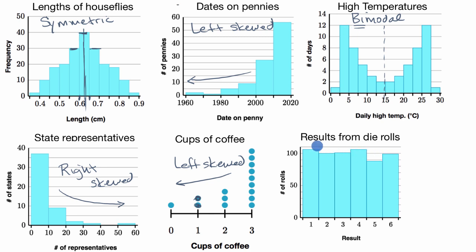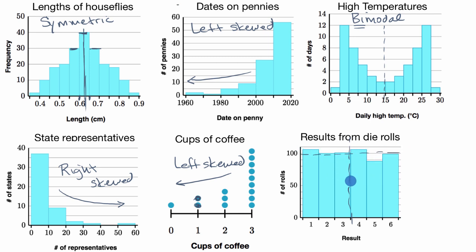This last distribution shows the results from die rolls. One could argue it's roughly symmetric — it's not perfectly symmetric, but the left and right sides look roughly similar. However, a more exact classification would be that it looks approximately uniform. So rather than calling it a symmetric or roughly symmetric distribution, most people would classify this as an approximately uniform distribution.